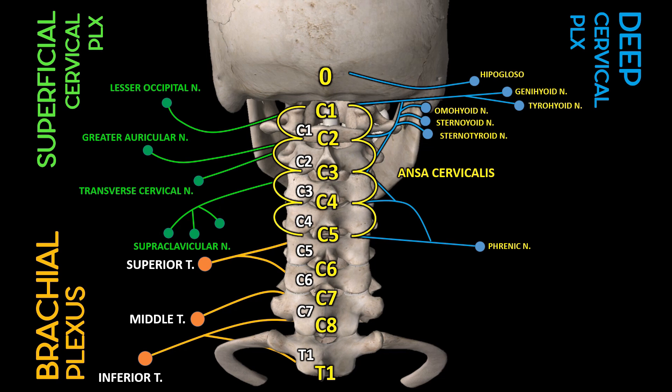The brachial plexus is a complex network of nerves that originates from the spinal nerves of the cervical and thoracic regions, C5 to T1. It is responsible for the innervation of the upper limb, including the shoulder, arm, and hand. The brachial plexus is formed by the merging and branching of these spinal nerves, giving rise to several major nerves that control motor and sensory functions of the upper limb. Various nerves originating from the brachial plexus collaborate to orchestrate precise motor functions and sensory perception within the shoulder region, enabling a diverse spectrum of movements while upholding the stability of the shoulder joint.